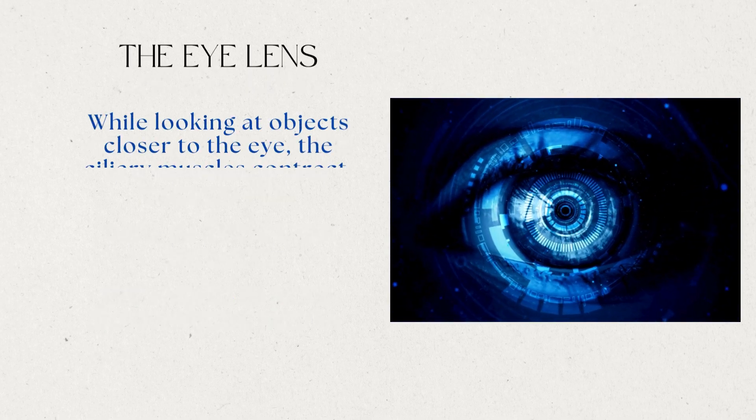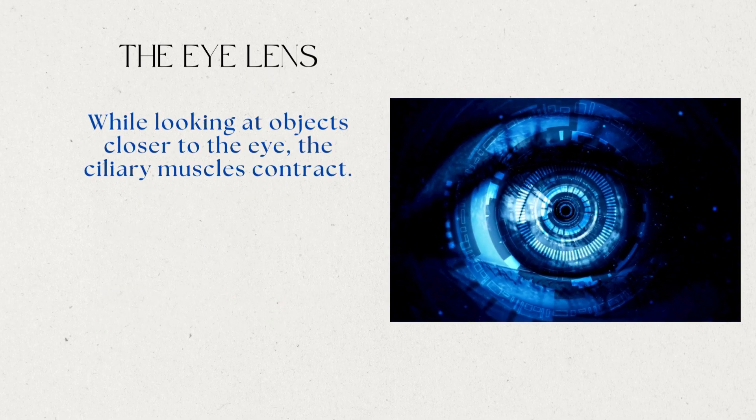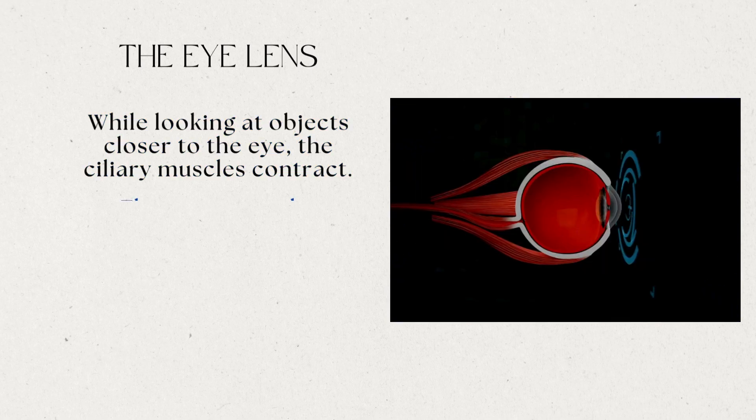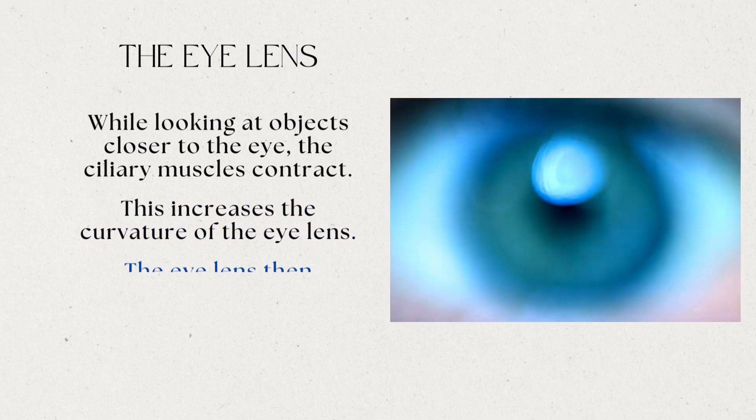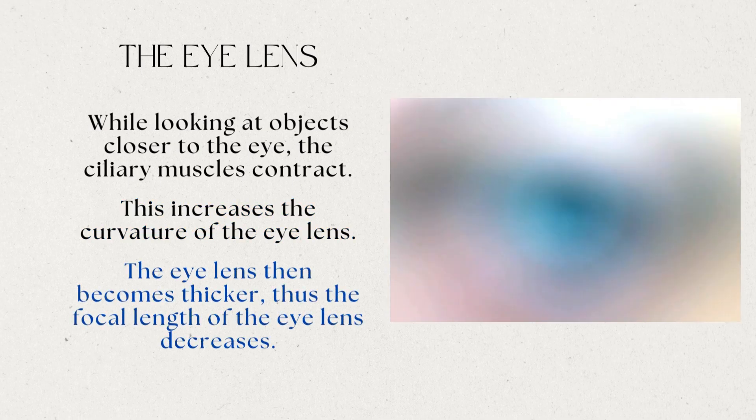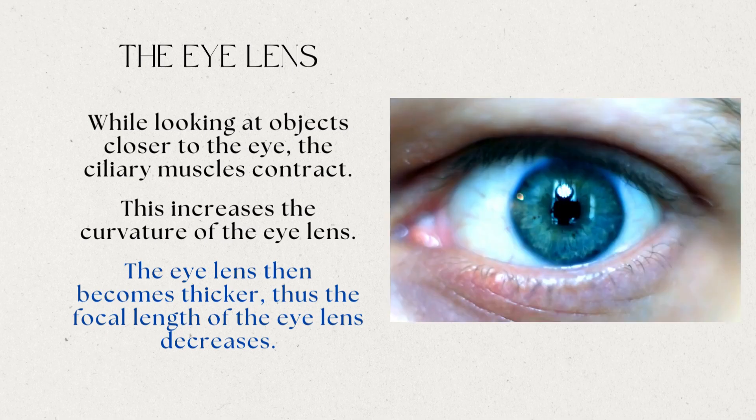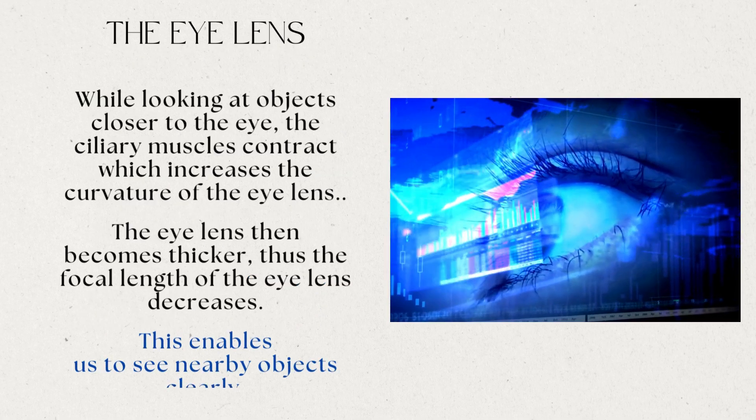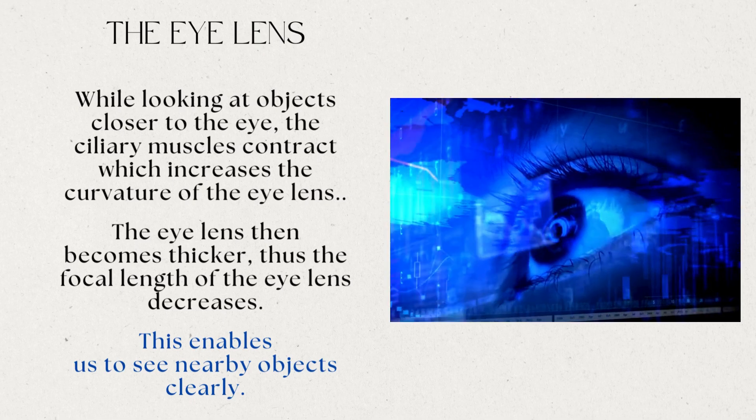When you are looking at objects closer to the eye, the ciliary muscles contract. This increases the curvature of the eye lens. The eye lens then becomes thicker. Consequently, the focal length of the eye lens decreases. This enables us to see nearby objects clearly.